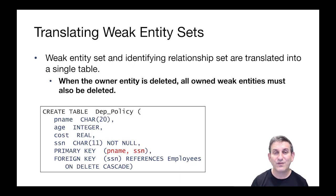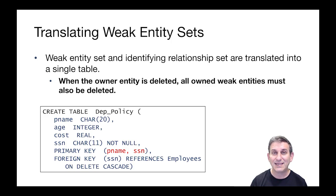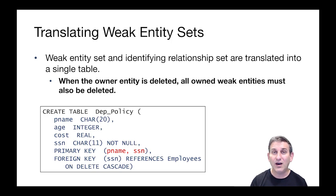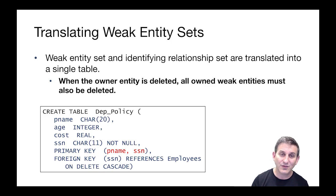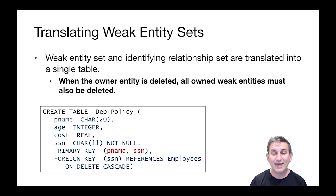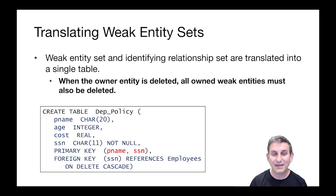Translating weak entity sets is fairly similar to what we did before, but we have to be a bit careful. The primary key of the weak entity set can't just be a key because weak entities don't have keys. It's the concatenation of the weak entity's partial key with the key of the entity set on the other side of the identifying relationship. So here, it's the pname and the SSN of the employee to whom this weak entity belongs.